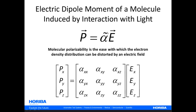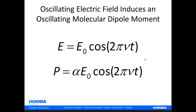It is important to note that the induced dipole moment P is a vector — with X, Y, and Z components. The incident electric field E is also a vector, and alpha, the polarizability, is a tensor — specifically a second-rank three-by-three tensor covering the X, Y, and Z axes. We'll get into that in some detail to understand the polarizability in three dimensions.